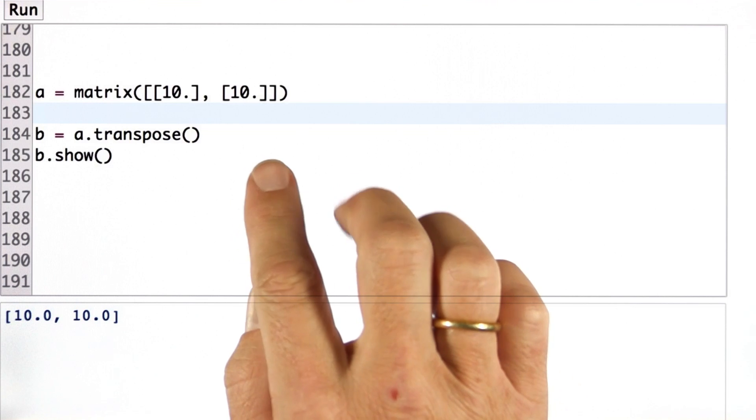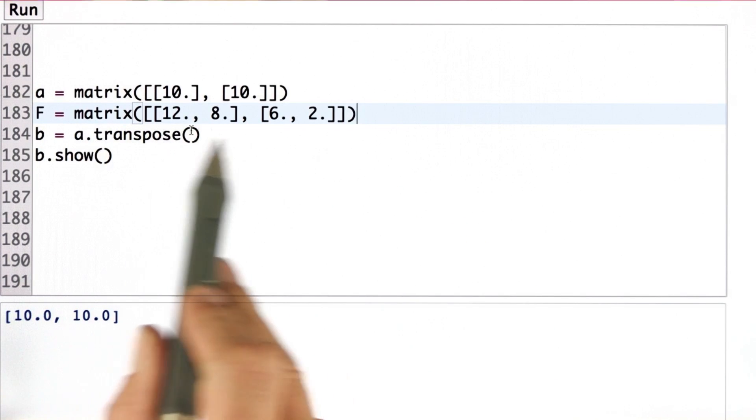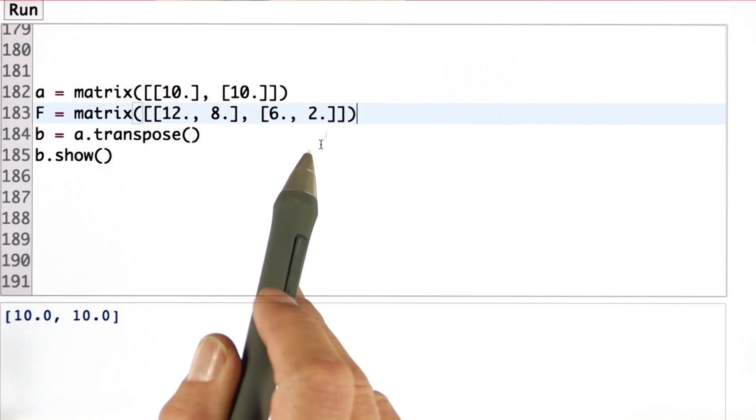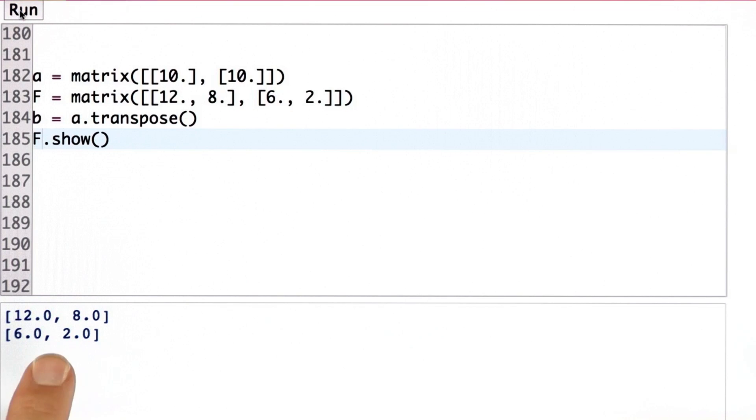And say you wish to multiply a matrix by a vector. Then we can make a two-by-two matrix with this initialization over here, matrix of 12, 8, and 6, 2. We can print this matrix. Here it is, 12, 8, 6, 2.